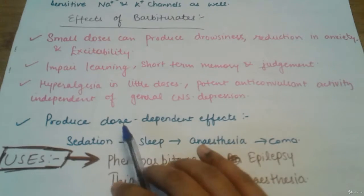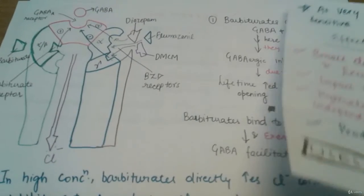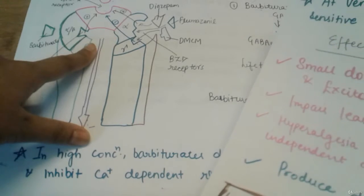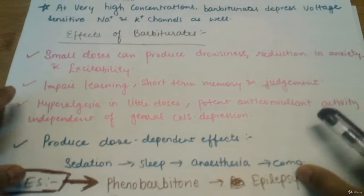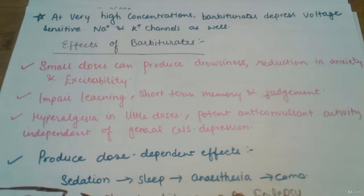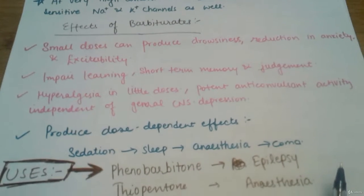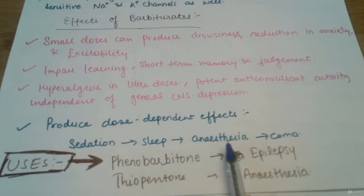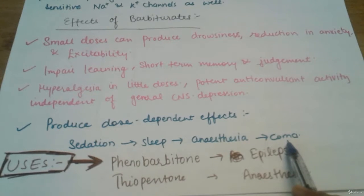Barbiturates show dose-dependent effects. At higher concentrations they directly act on the chloride channel and inhibit transmitter release, and at very high concentrations they also depress the sodium and potassium channels along with chloride and calcium channels. The progression follows: sedation, then sleep, then anesthesia, and then coma. Withdrawal is also very difficult, so barbiturates must be taken very cautiously.